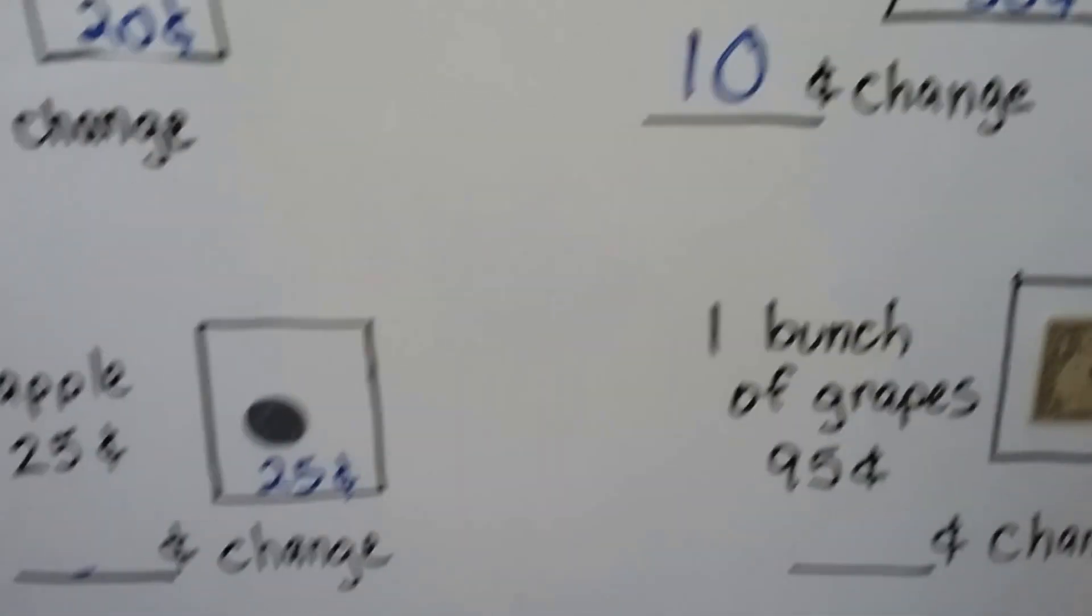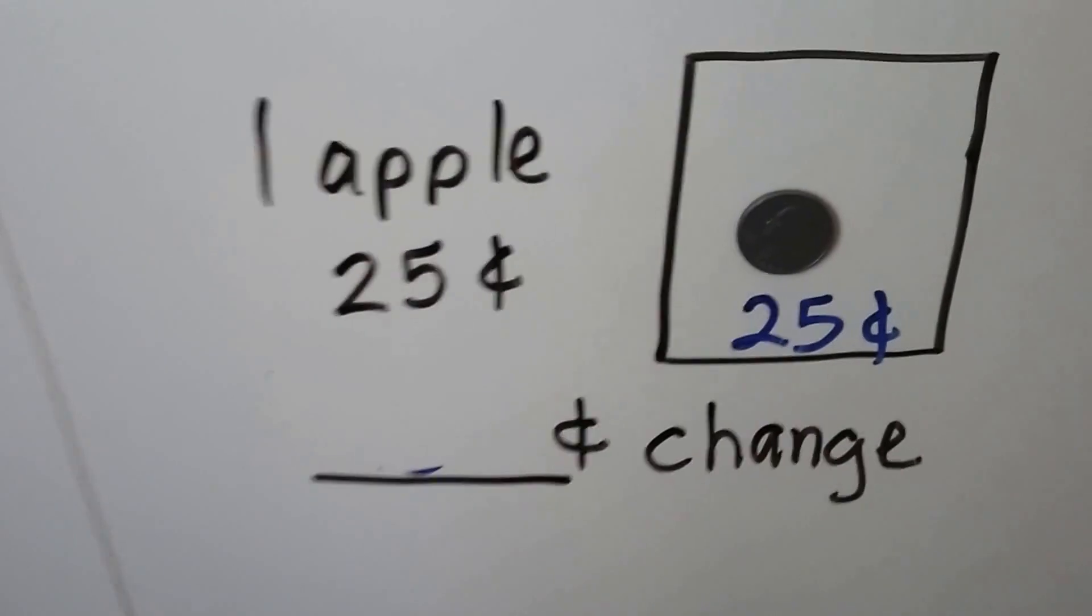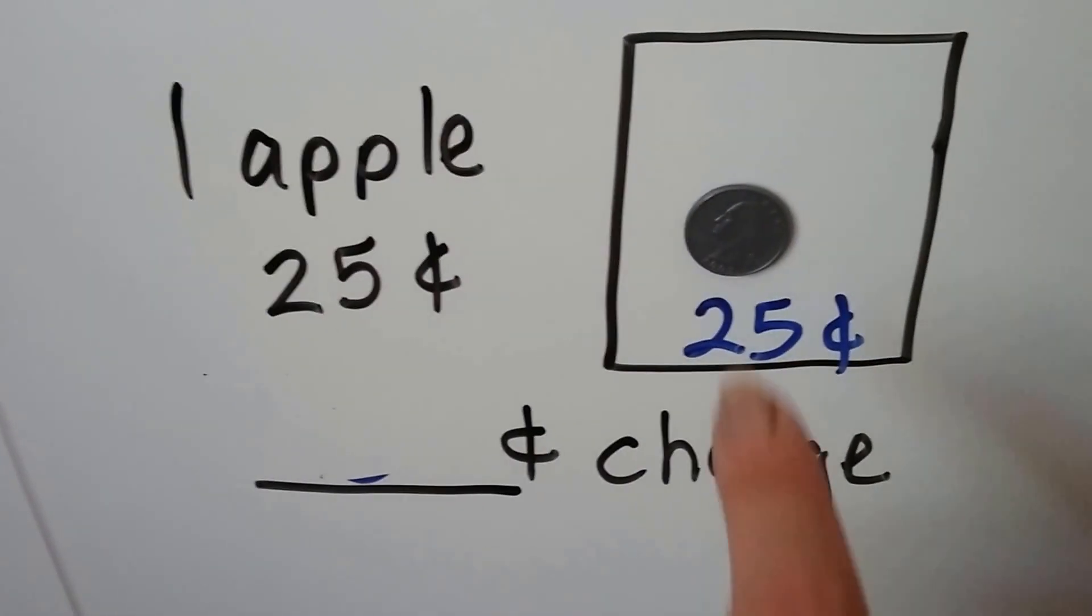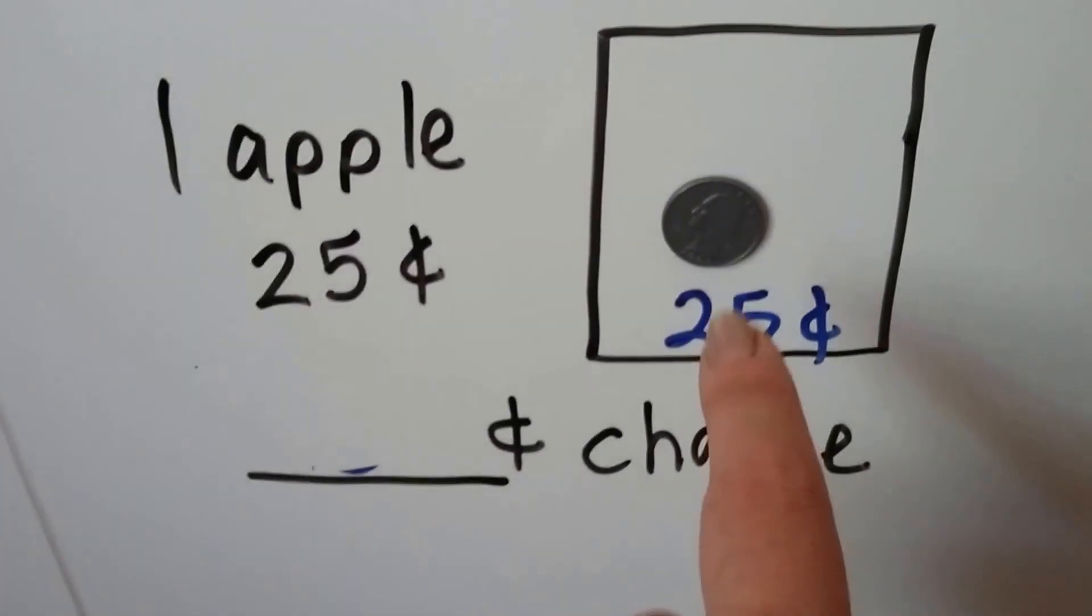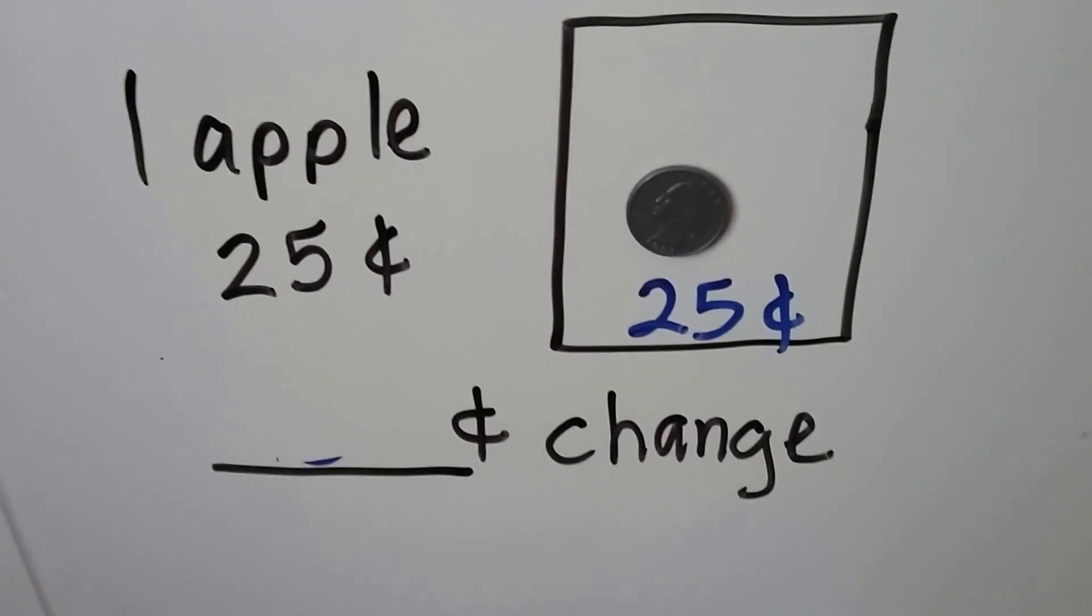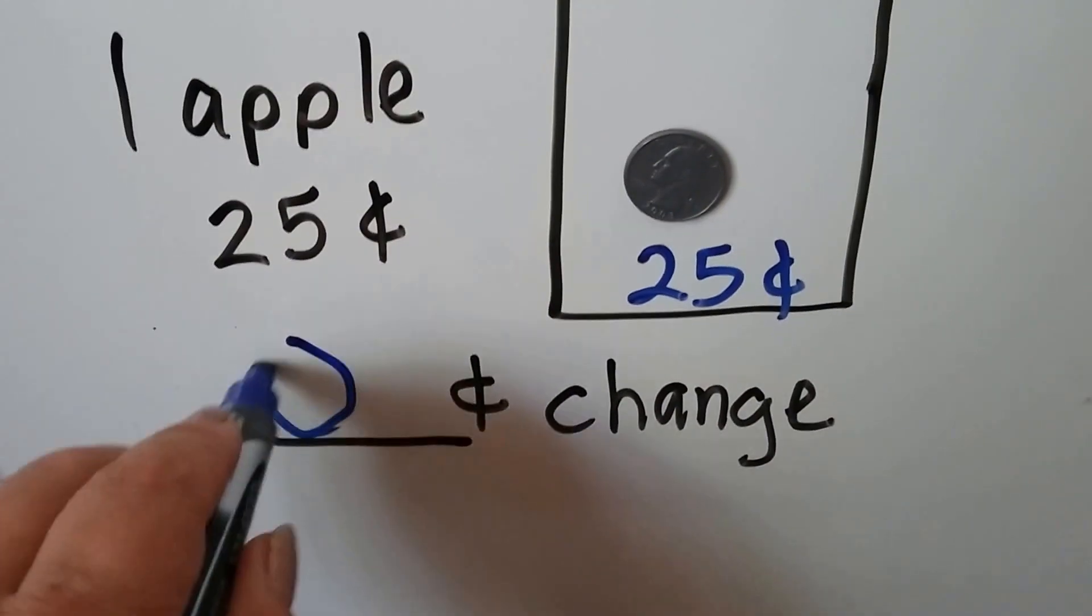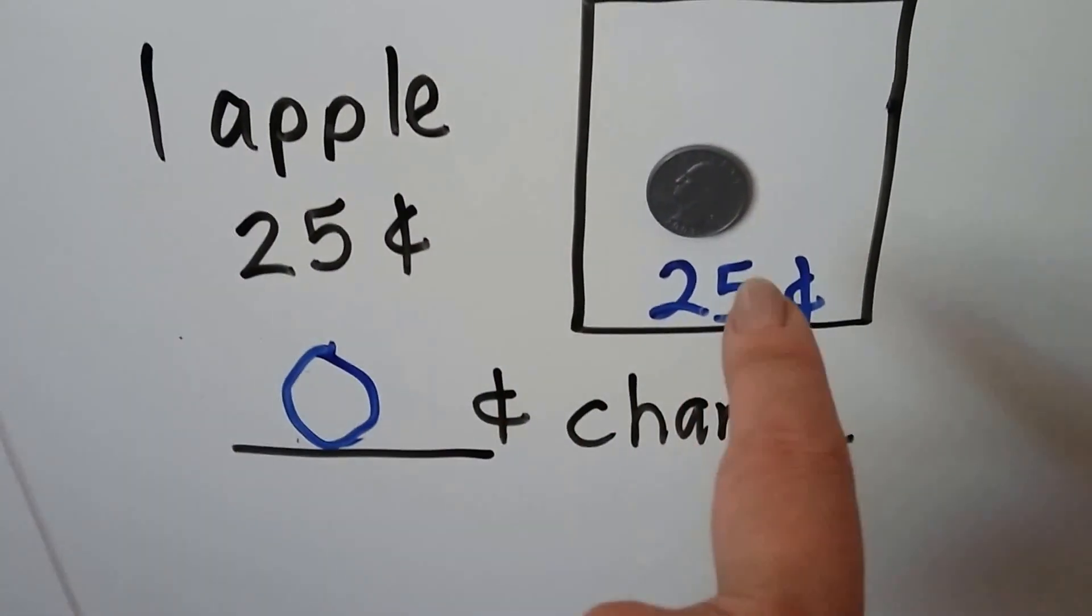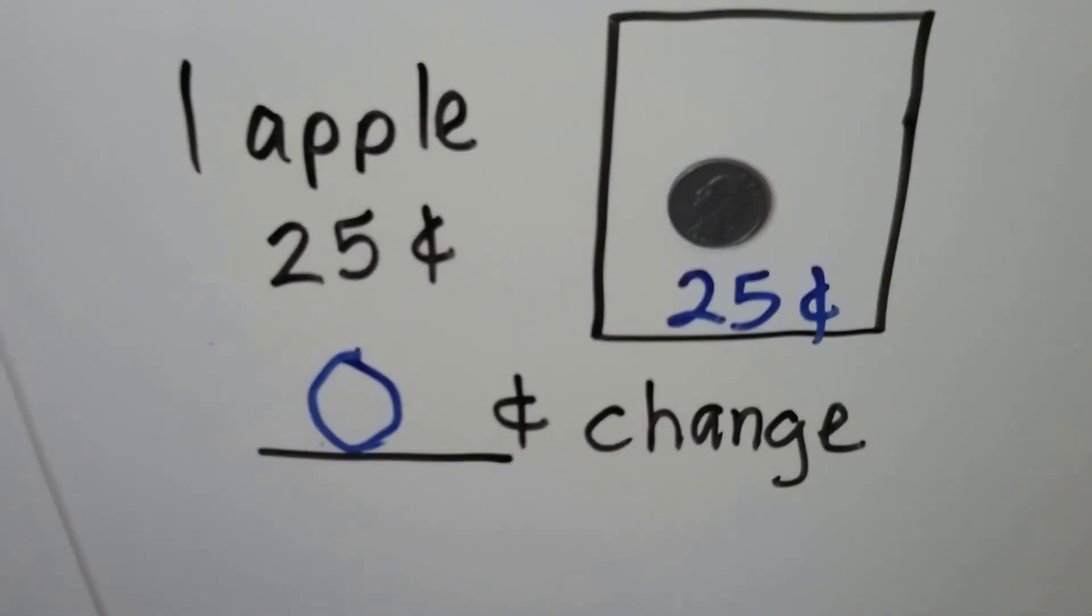Let's try this one. We want to buy an apple for 25 cents and we give a quarter that is 25 cents. How much change should come back? Zero. It costs 25 and we gave 25, so there's no change.